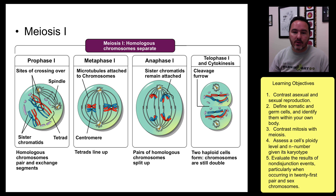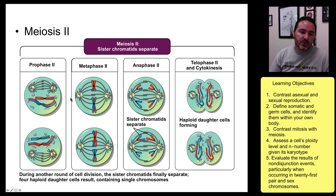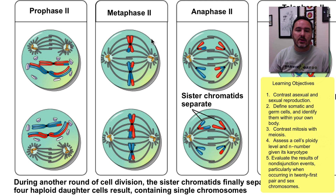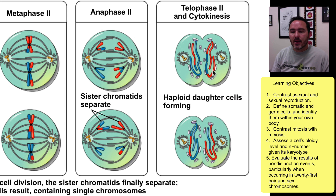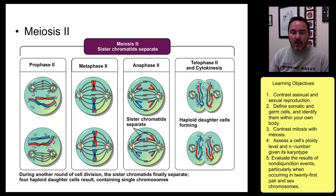You go immediately into meiosis II. In meiosis II, you once again have a prophase, and then metaphase — now the cell is in a haploid condition, but all chromosomes line up along the midline, which should look reminiscent of what was happening in mitosis. In anaphase, the sister chromatids are separated. You eventually go through telophase and cytokinesis, and you end up with the daughter haploid cells. We call these gametes — eggs or sperm.